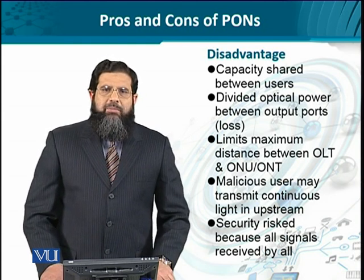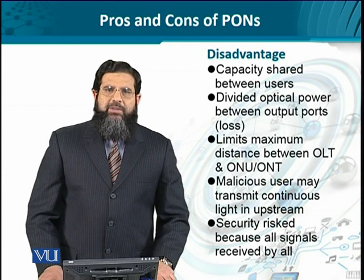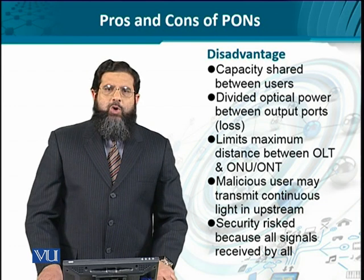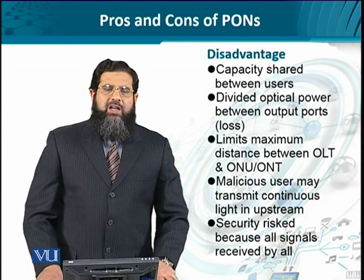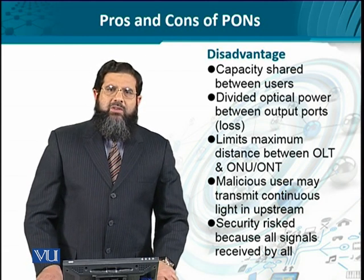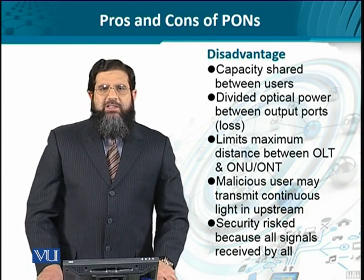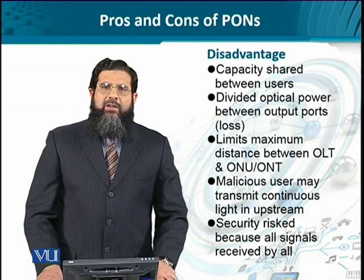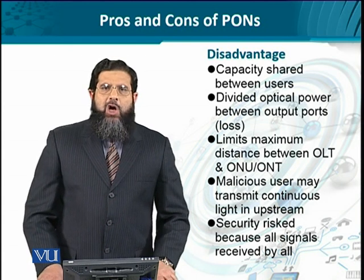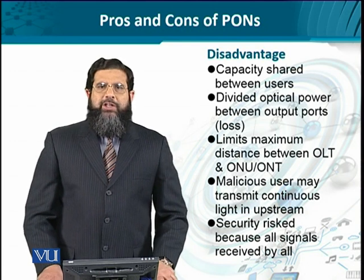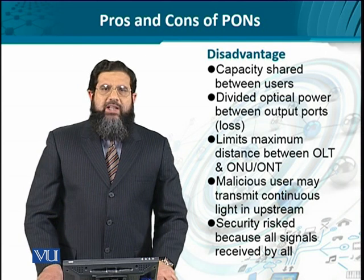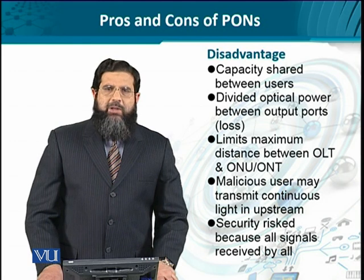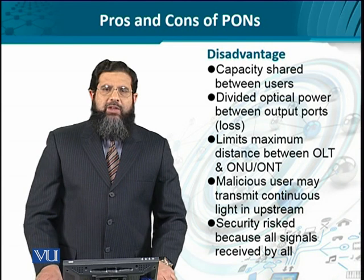Likewise, the optical fiber carries limited light power. The optical power coming from the OLT is split or distributed between the output ports by a device known as an optocoupler — a passive optocoupler, or splitter — which splits power equally to all outgoing ports. This results in lower power, so the signal-to-noise ratio is affected, and this has a direct bearing on the total distance over which the fiber optic can provide an acceptable signal-to-noise ratio. So the overall length between the OLT and the ONU or ONT would be limited.